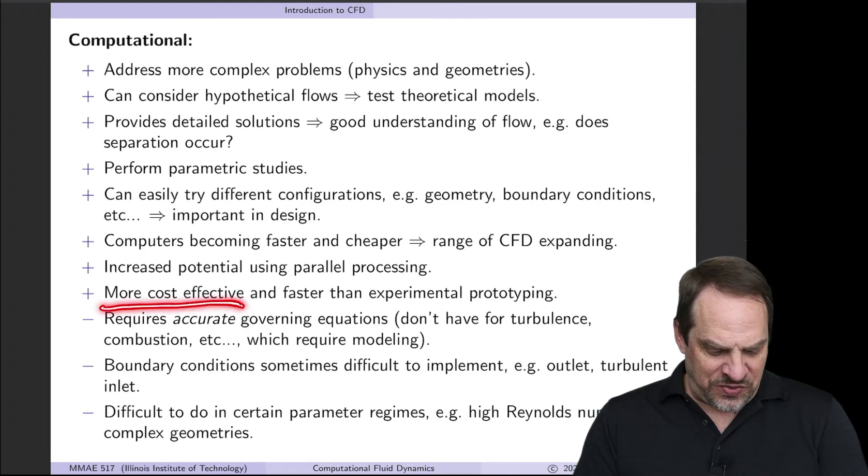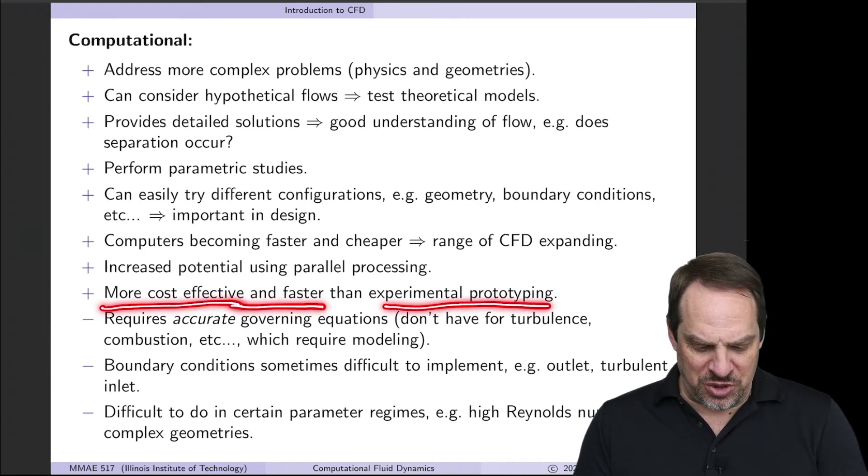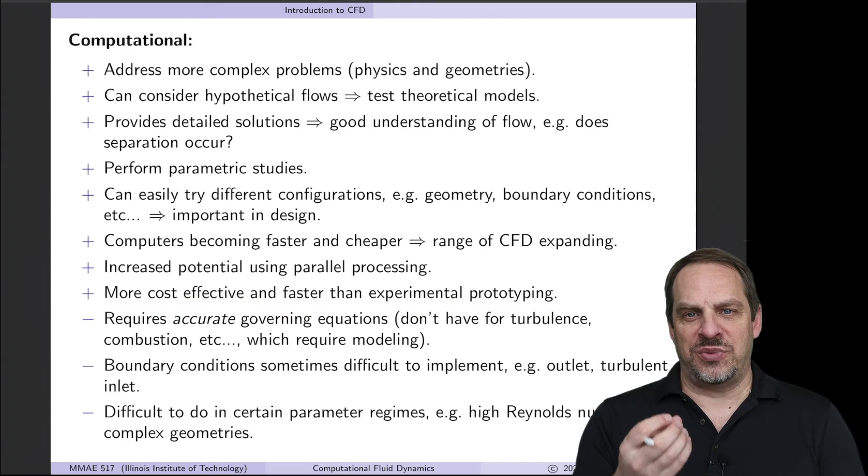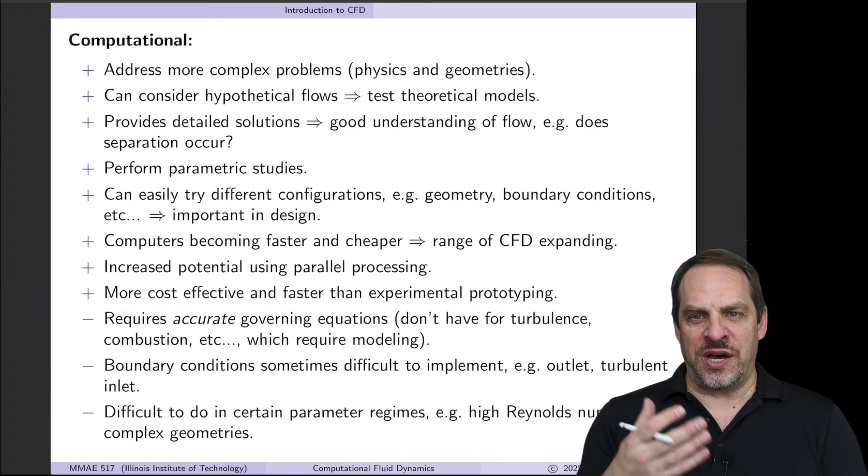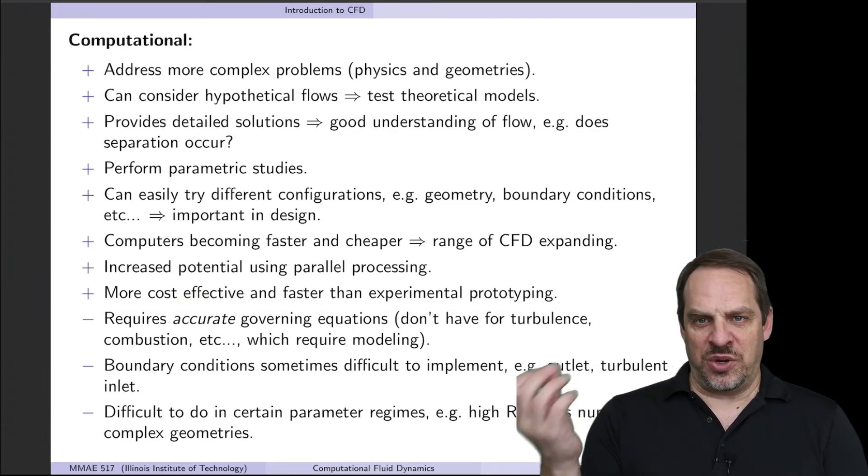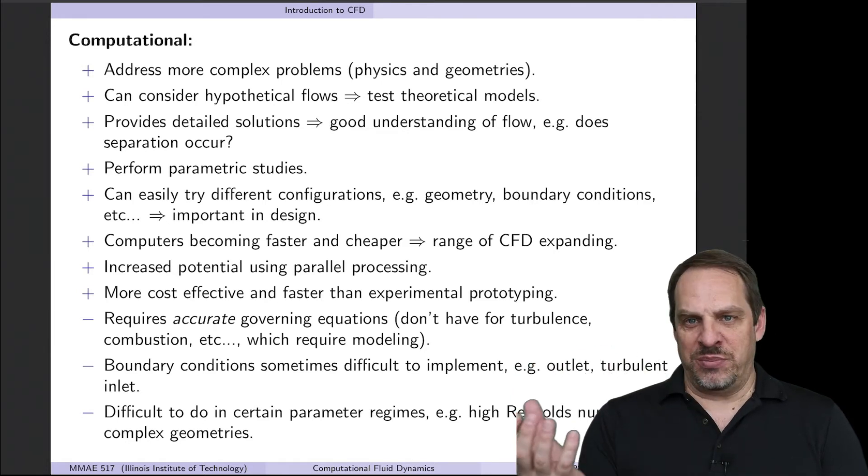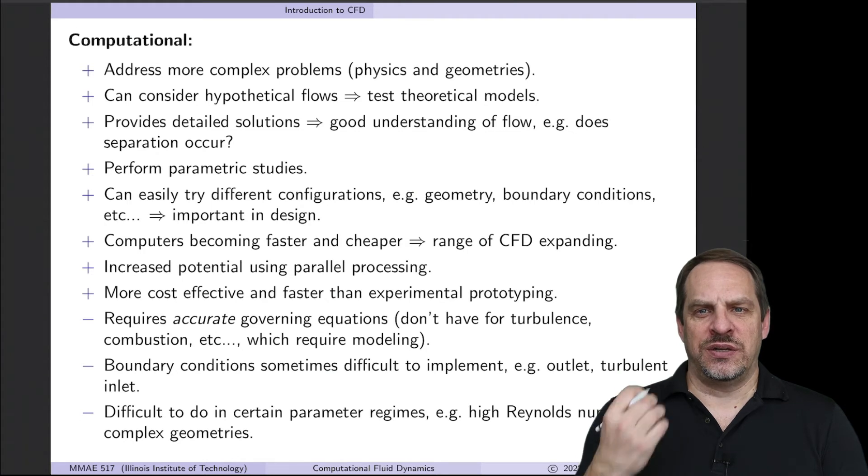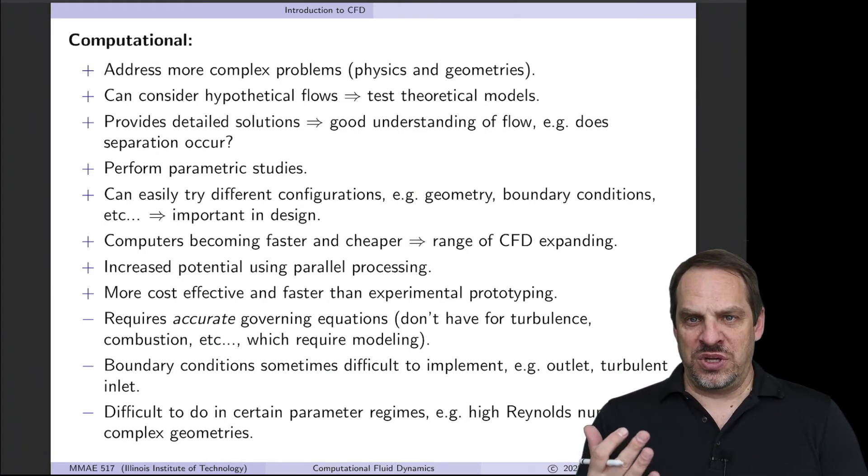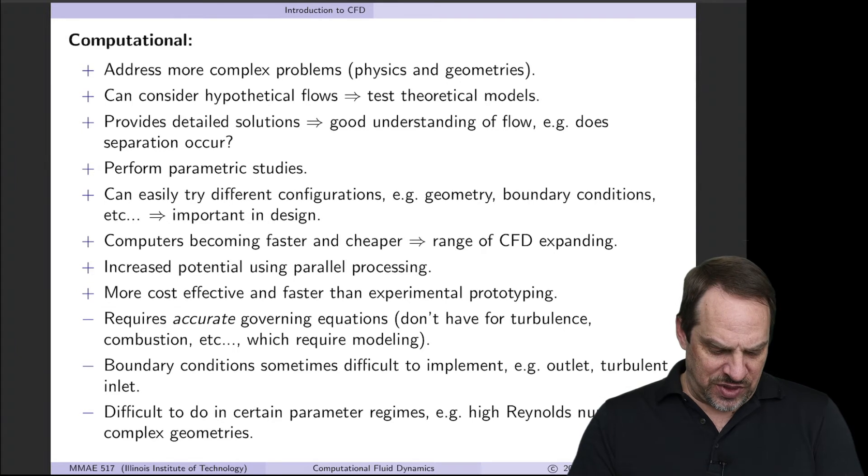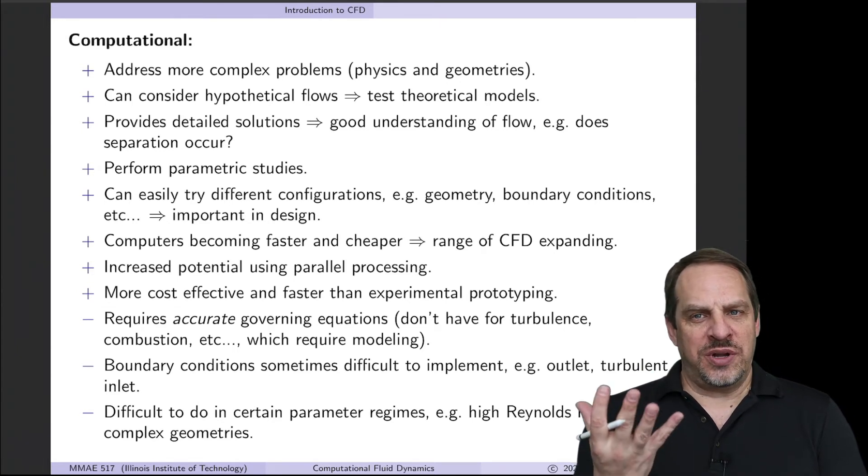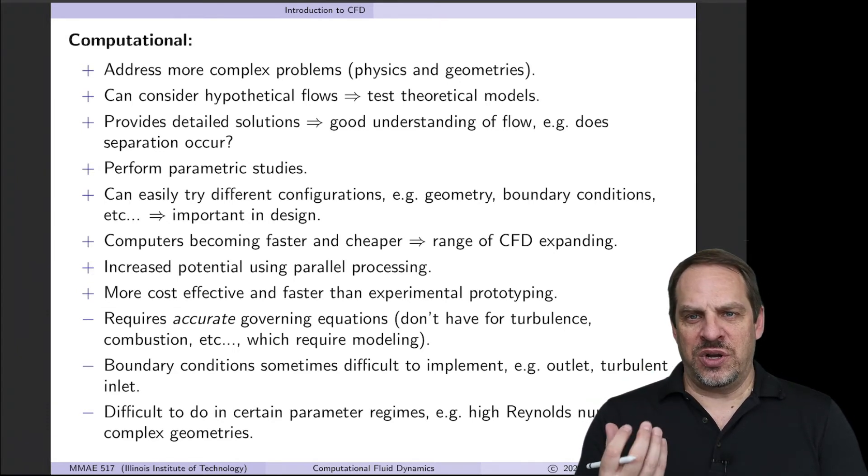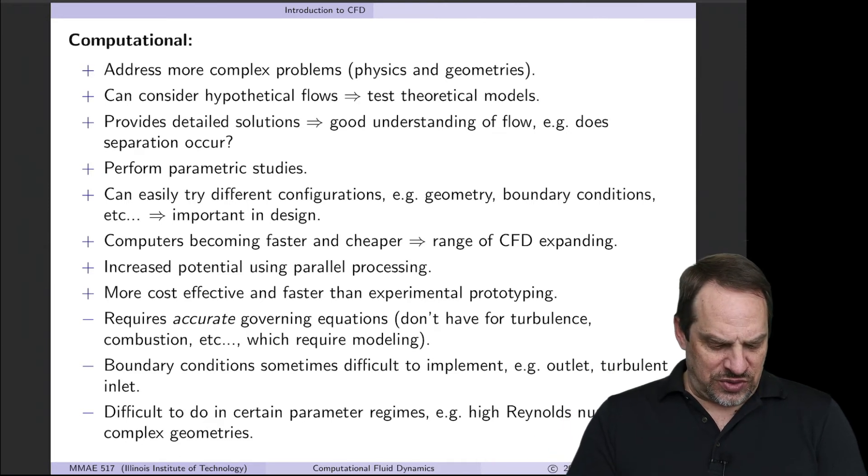It's typically more cost-effective and faster than experimental prototyping. If I want to test something experimentally, I have to design and fabricate the prototype, take it to my wind tunnel, I may have to wait my turn to use the wind tunnel, take the measurements, process the data, and so forth. That's all very time-consuming and can be quite expensive as well. So on a computer, I can make the changes to the geometry quicker. I don't have to refabricate something. So it's often more cost-effective and faster.